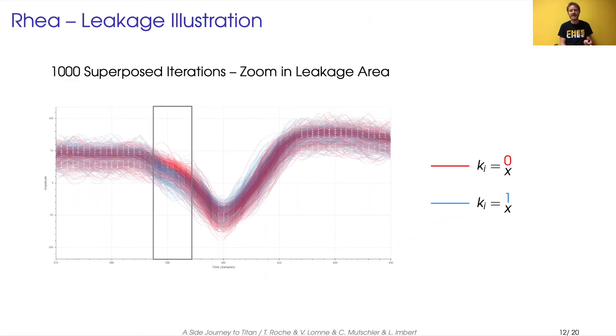To illustrate this leakage, I superpose here 1000 iterations of very specific time sample. And I colored in red the one corresponding to a leading bit 0 and the other in blue. And we can see inside this gray rectangle that looking at the traces actually gives us some information on the value of this leading bit.